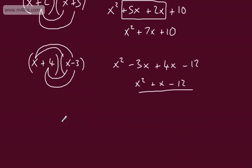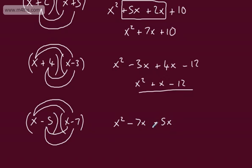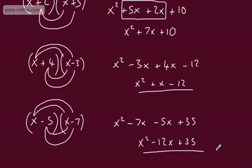If you have two negatives — for example, x minus 5 multiplied by x minus 7 — the first terms give us x squared. The outer terms give us minus 7x. The inner terms give us minus 5x. And the last terms: a negative multiplied by a negative is a positive, so that gives us positive 35. Collecting these terms up: x squared minus 12x plus 35. And that is our expansion.